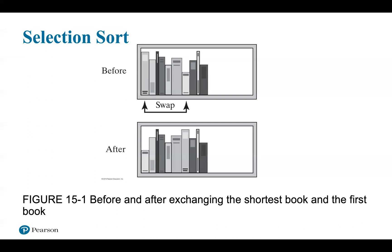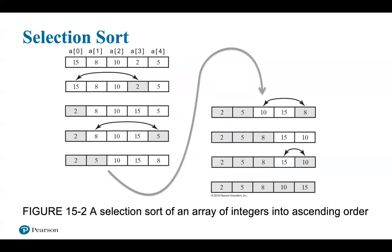You now ignore the shortest book and repeat the process for the rest of the bookshelf. Figure 15-2 shows how a selection sort rearranges an array of integers by interchanging values. Beginning with the original array, the sort locates the smallest value — the 2 at A[3]. The value in A[3] is interchanged with the value in A[0]; after the interchange, the smallest value is in A[0] where it belongs.